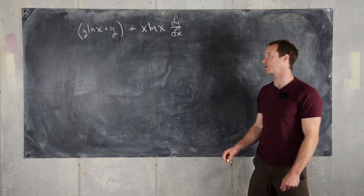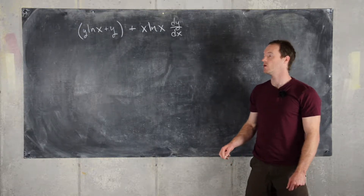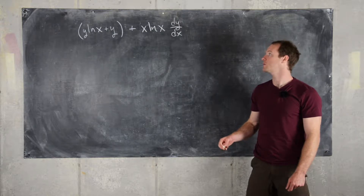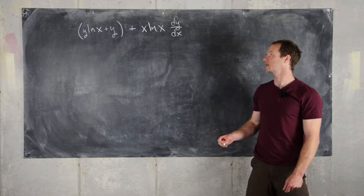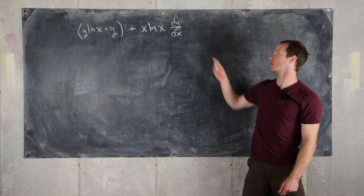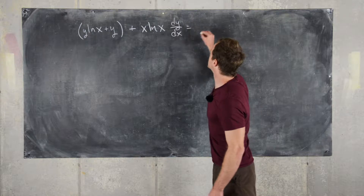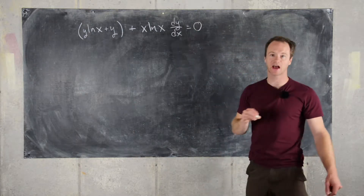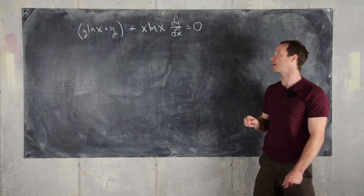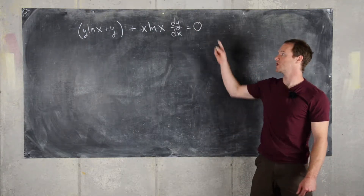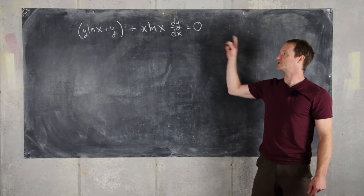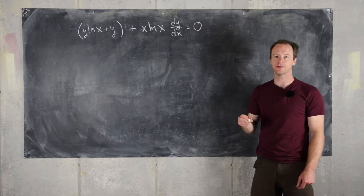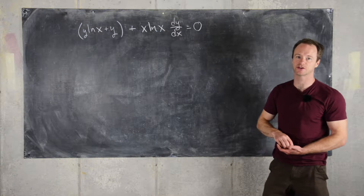Here we're going to look at this differential equation: Y times the natural log of X plus Y, plus X times the natural log of X times the derivative of Y with respect to X equals 0. The way it's written in this form gives a hint that it might be an exact differential equation.